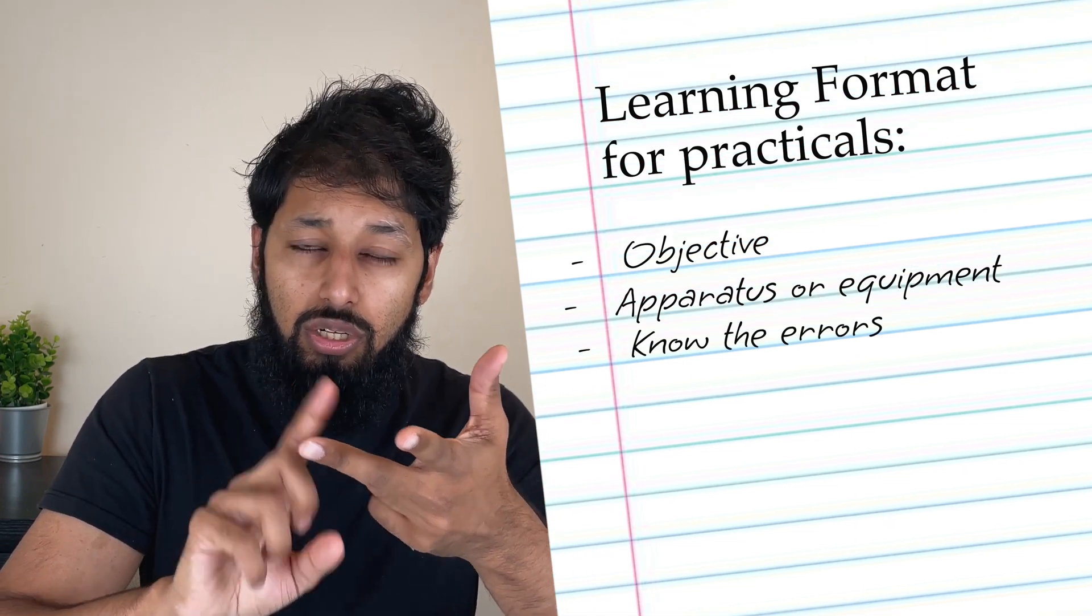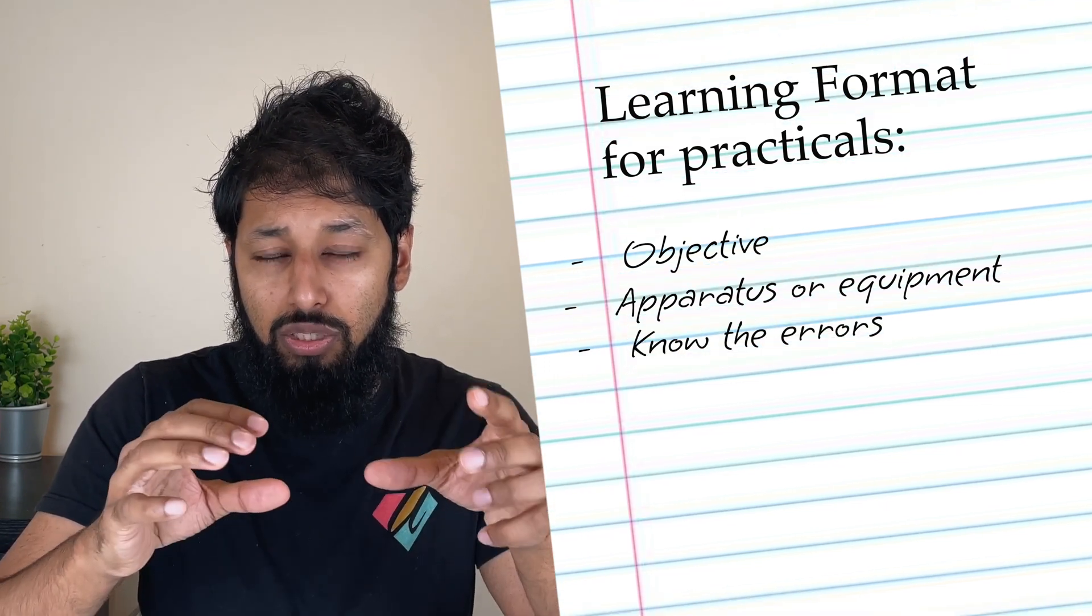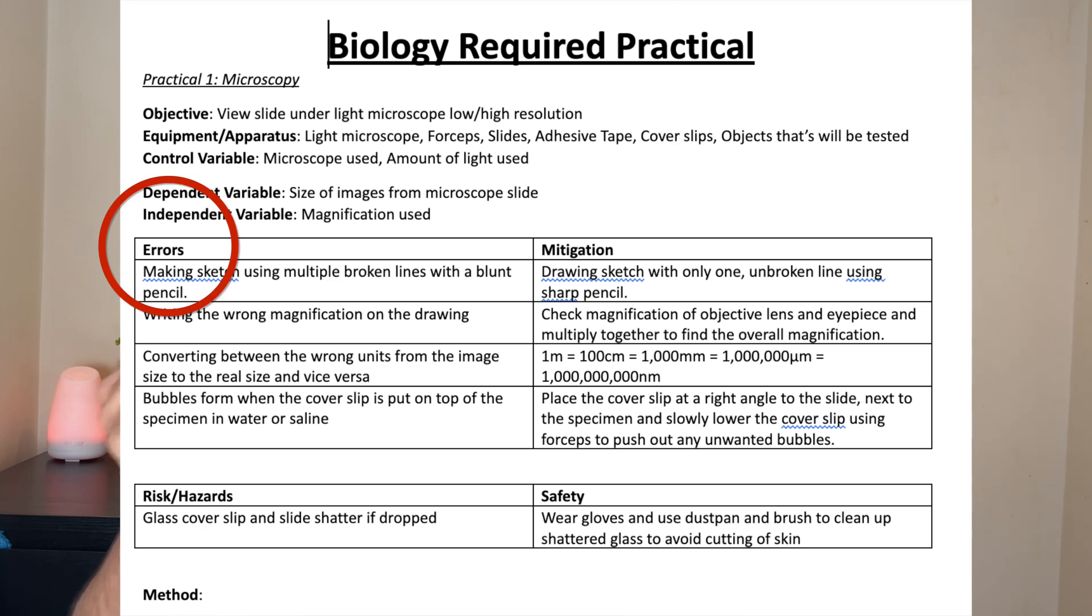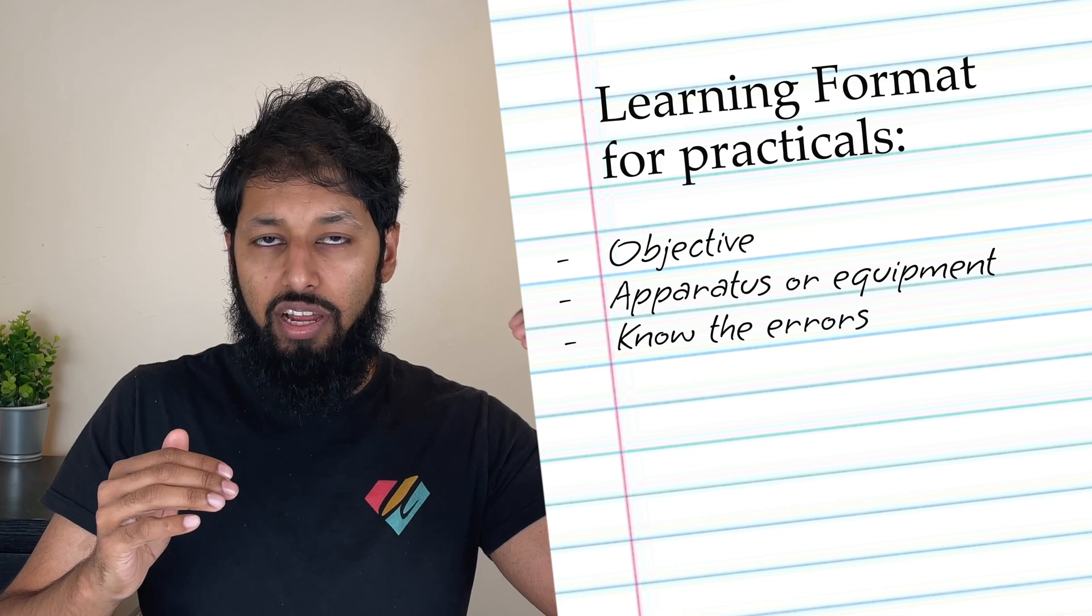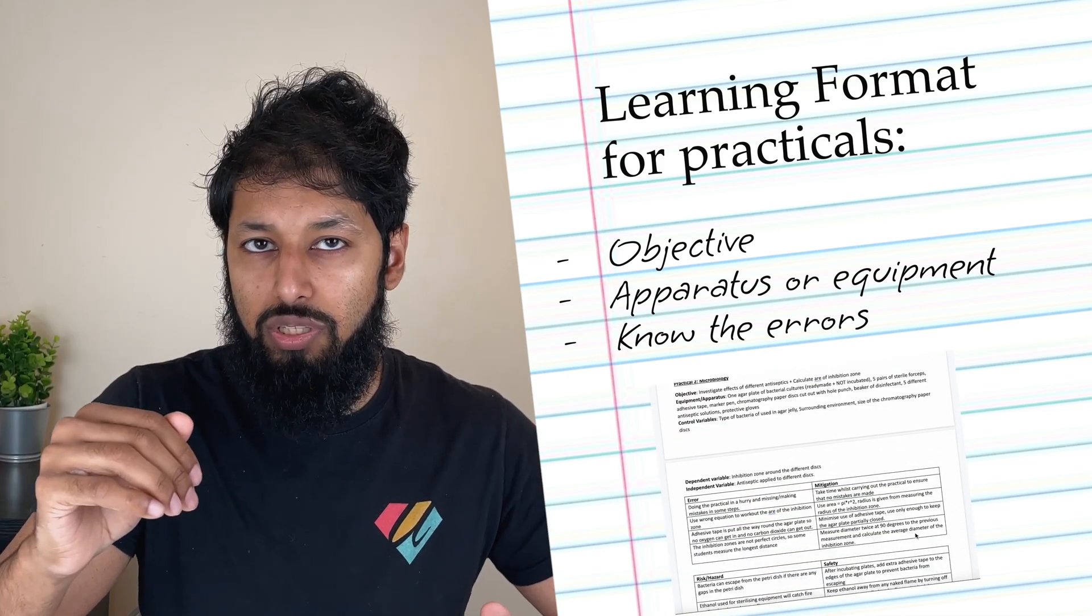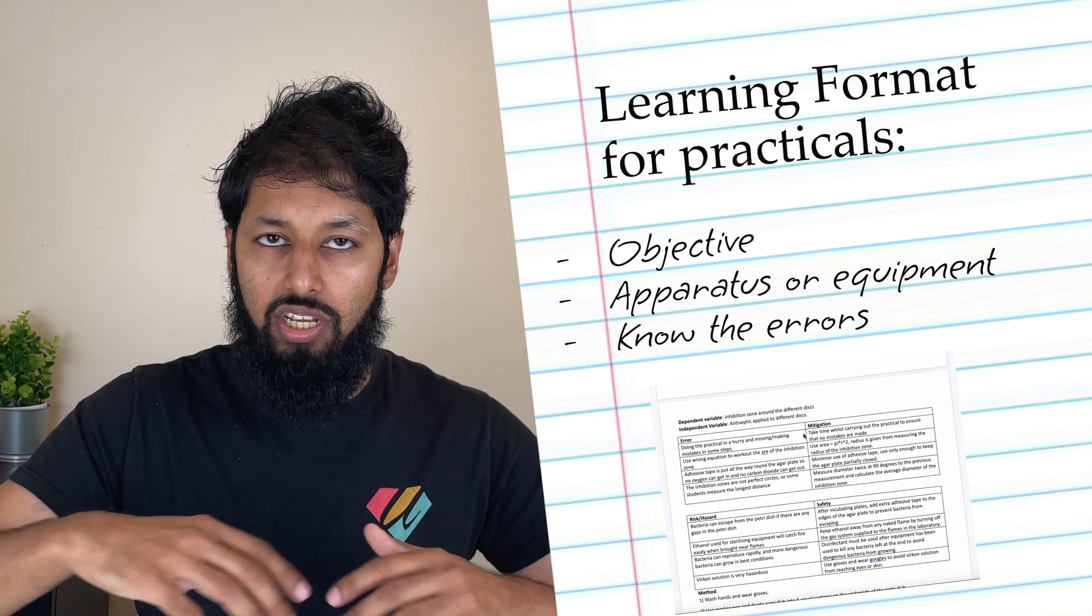And the format goes like this: number one, objective. Number two, you need to know all the apparatus or equipment. Number three, you need to know the errors. And the way I like to do it is I like to write the errors and the mitigations next to them. You've got the errors and the mitigations in a table form: error number one associated with this mitigation that goes with it, error number two and mitigation number two.